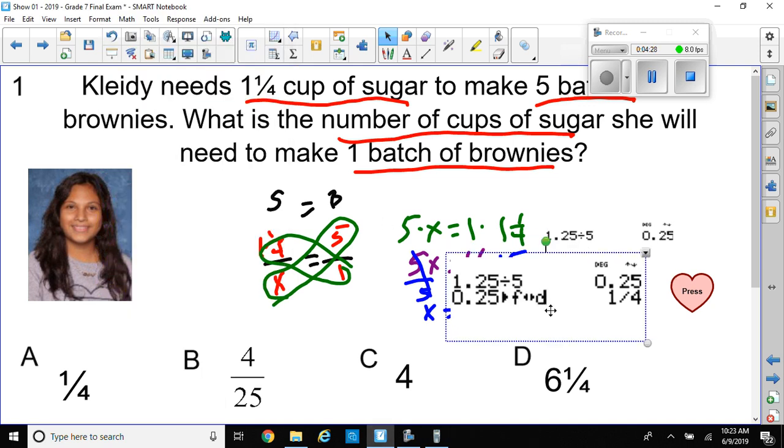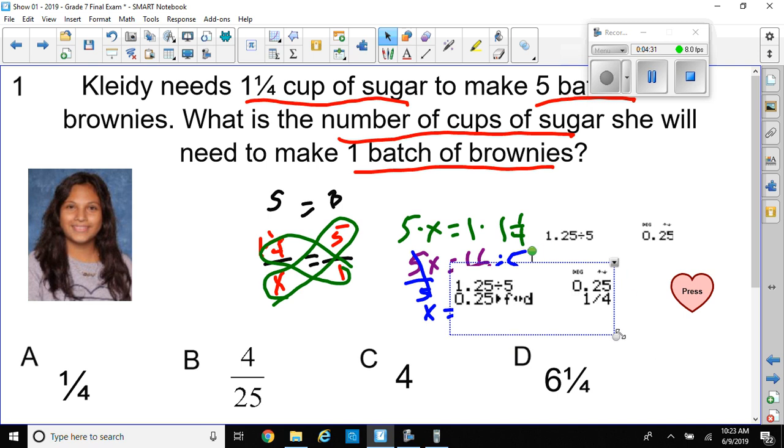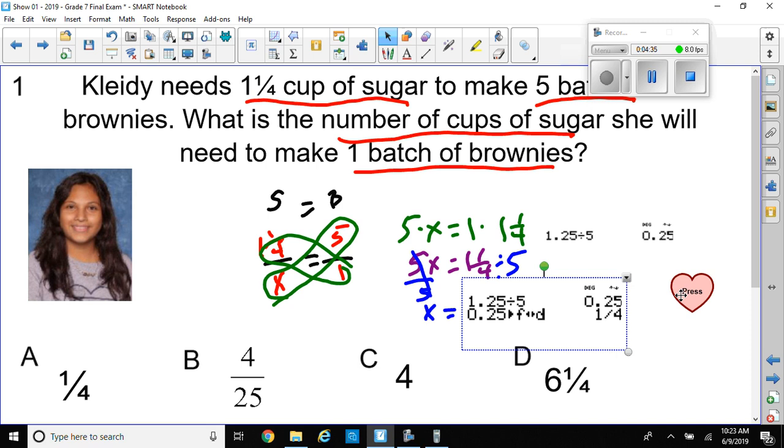So, our answer will be one-fourth. So, X equals one-fourth, which is choice A. So, I hope the brownies taste good.